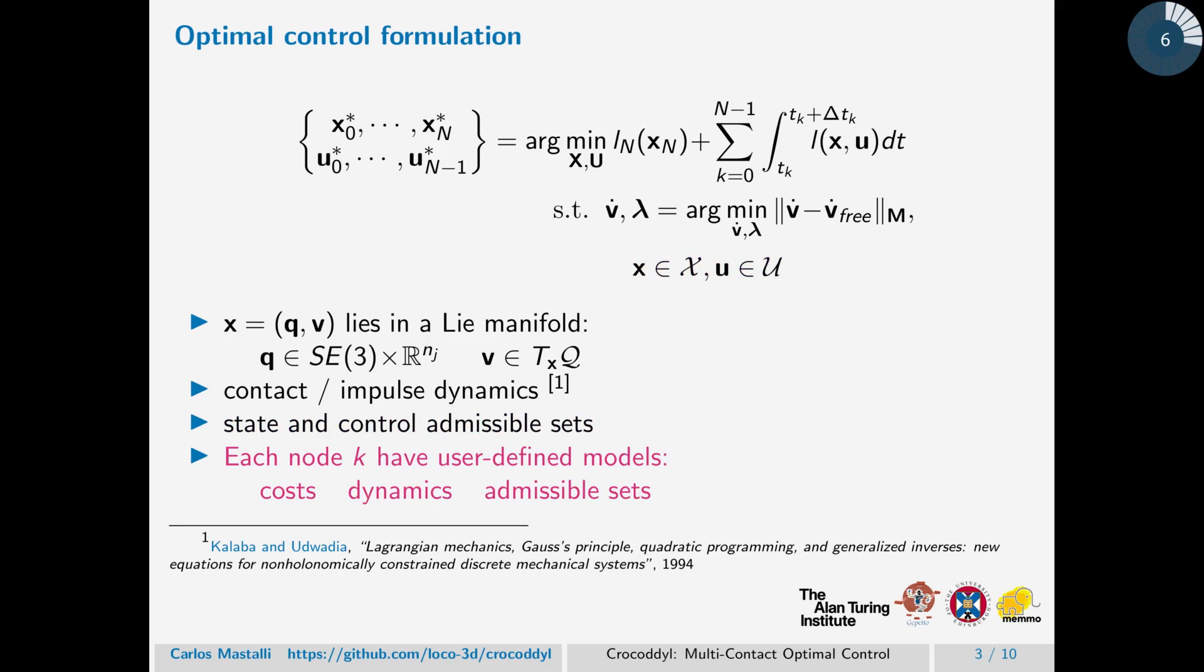Our library is quite flexible. We can define or specialize models for each node, such as different costs, different dynamics, different admissible sets.